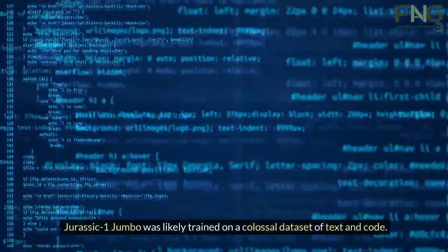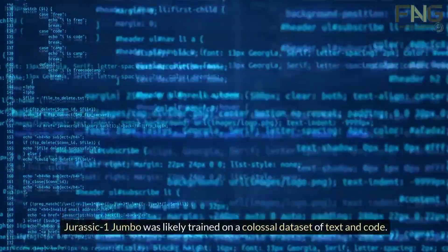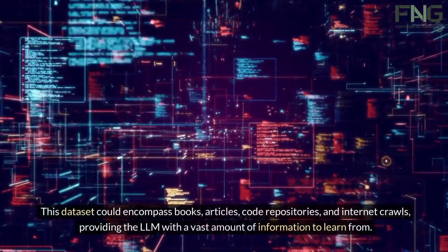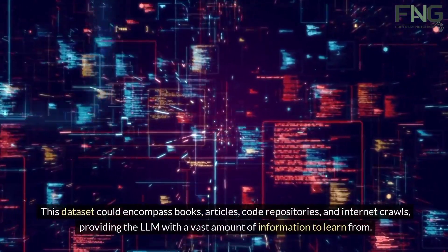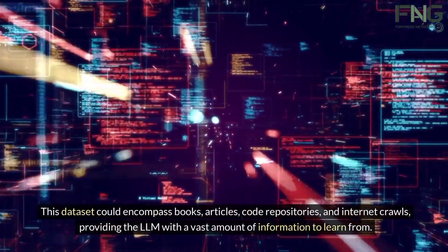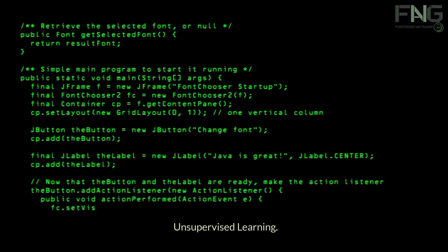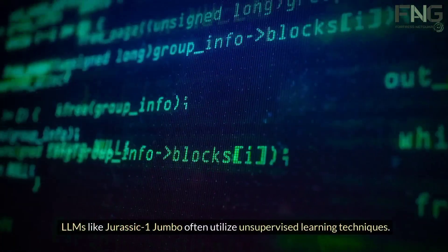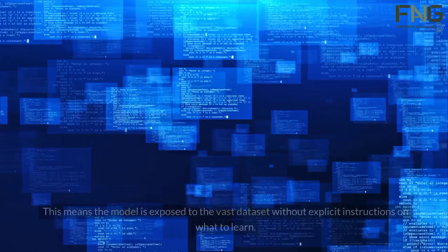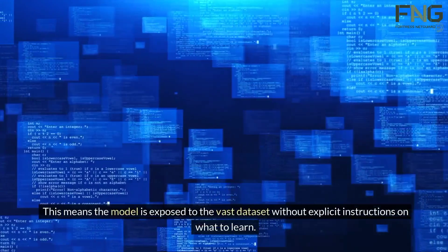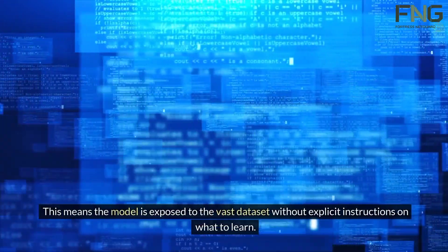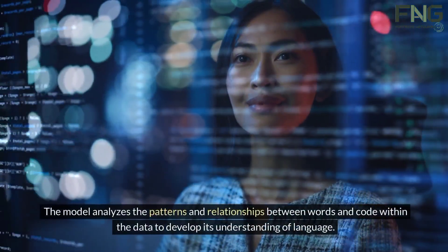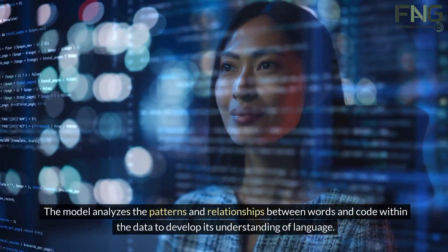Massive dataset of text and code: Jurassic-1 Jumbo was likely trained on a colossal dataset of text and code. This dataset could encompass books, articles, code repositories, and internet crawls, providing the LLM with a vast amount of information to learn from. Unsupervised learning: LLMs like Jurassic-1 Jumbo often utilize unsupervised learning techniques. This means the model is exposed to the vast dataset without explicit instructions on what to learn. The model analyzes the patterns and relationships between words and code within the data to develop its understanding of language.